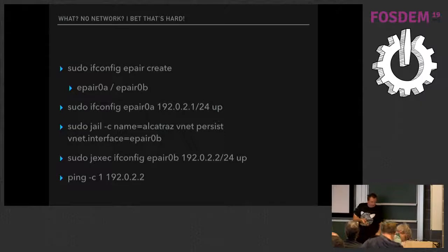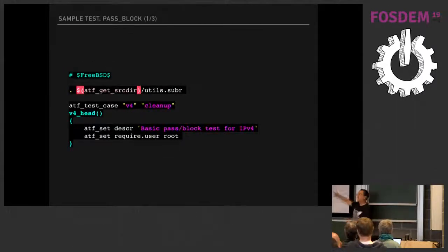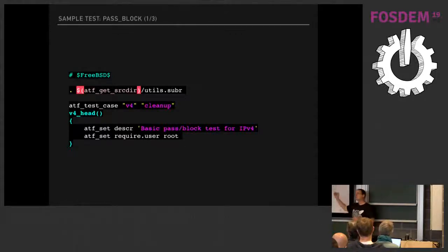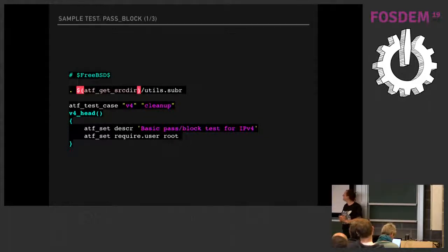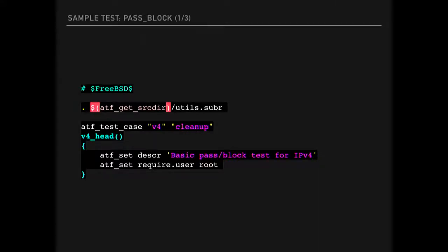ICMP echoes are not very exciting but they do exercise a fair bit of your functionality. Looking at the basic test — we use ATF; we noticed NetBSD had left their front door unlocked one night so we went in and took their testing framework. We declare a test case for v4 with a cleanup function, set the description, and note that this test wants to run as root. The nanny state of FreeBSD has decided that if you want to create network interfaces, start jails, and configure firewalls, maybe not every user on the system should do this.